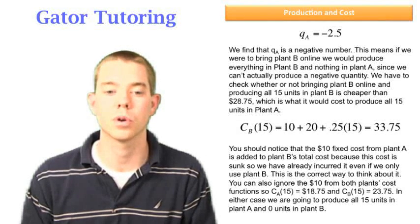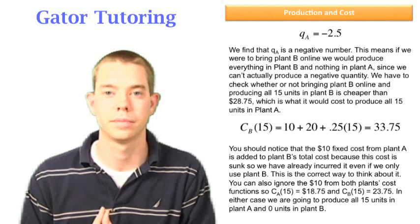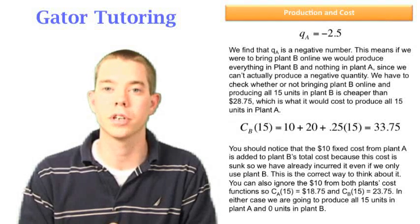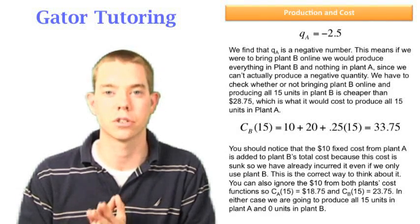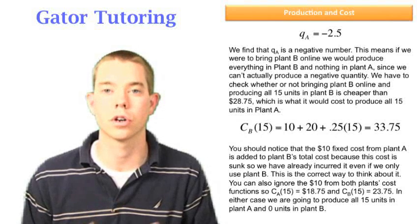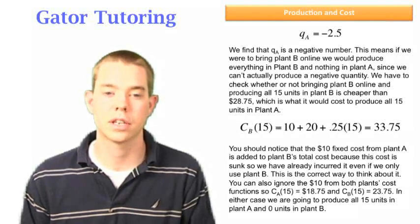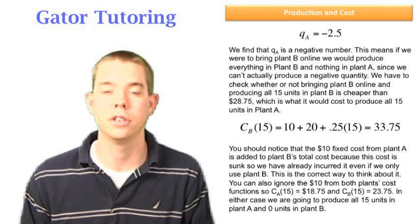In either case, we're going to produce all 15 units in plant A and zero units in plant B. You can do that two ways. You can either ignore the fixed cost from plant A and take it out of the total cost function, or you can add it to both plants' total cost functions because you are incurring it no matter what. Either way, you're going to get the same answer, and in this case, it's zero in plant B and all 15 units in plant A.